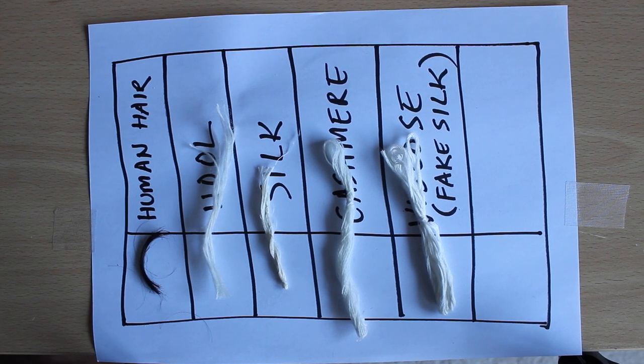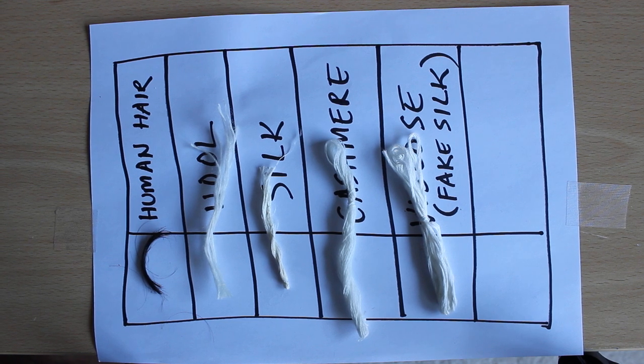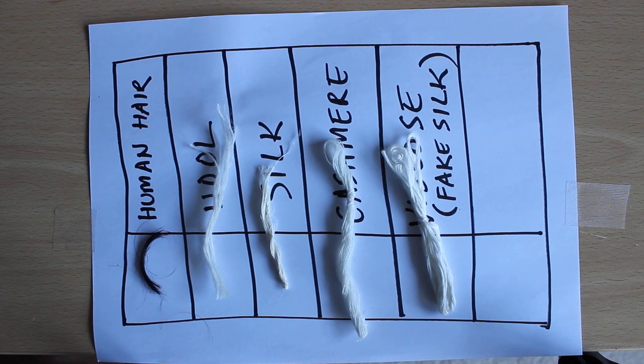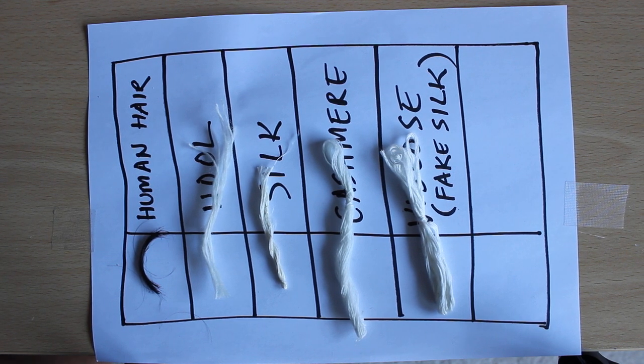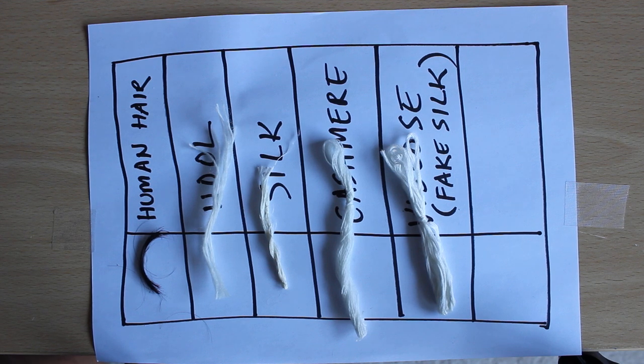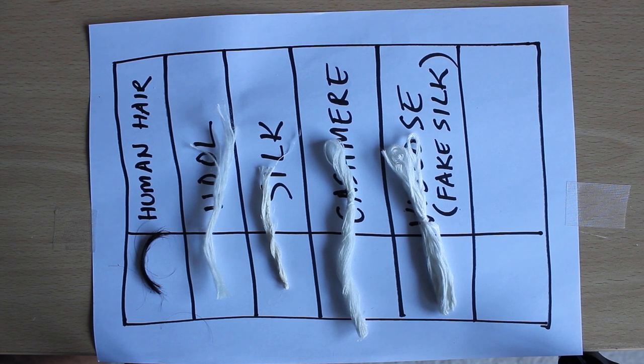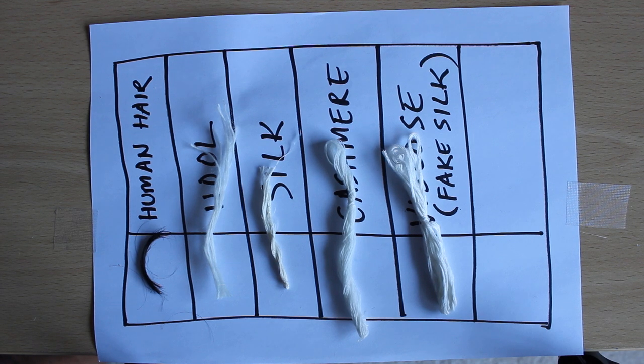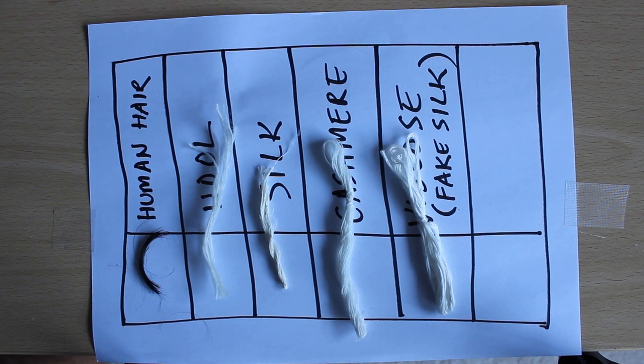cashmere, and viscose—also known as fake silk—and see how they react to fire. This is also a good way to check whether or not the product you purchased is made from genuine natural fiber.